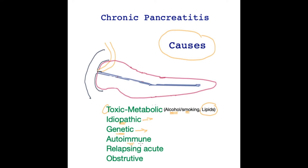Autoimmune causes occur where the body's own immune system attacks the pancreas. Any cause that triggers acute pancreatitis puts patients at risk of developing chronic pancreatitis if the offending cause is not recognized and treated. Lastly and importantly, obstructive elements — any cause that obstructs the pancreatic duct — will put the pancreas at risk of developing pancreatitis.